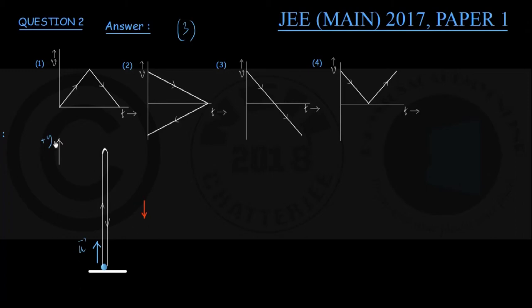So using the sign convention, upward is positive, we can write down acceleration of the particle during the whole flight, that is upward as well as downward flight, as minus g.